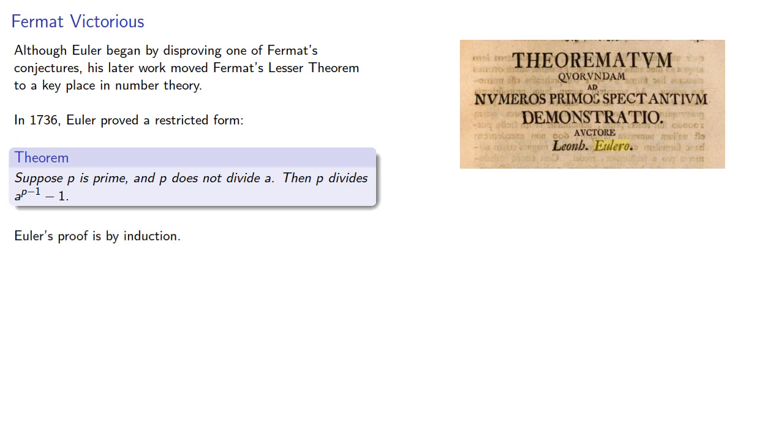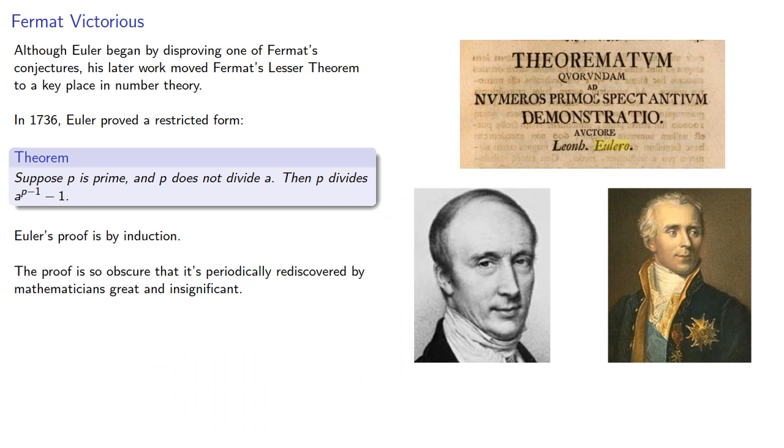Euler's proof is by induction. The proof is so obscure that it's periodically rediscovered by mathematicians great and insignificant.